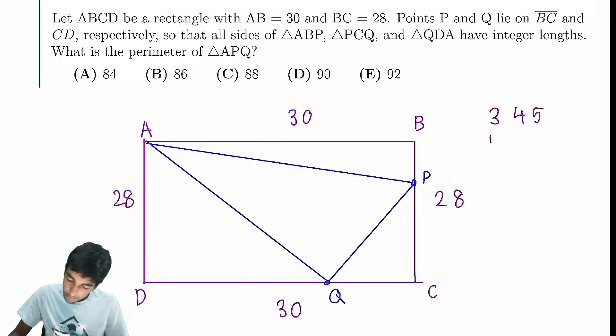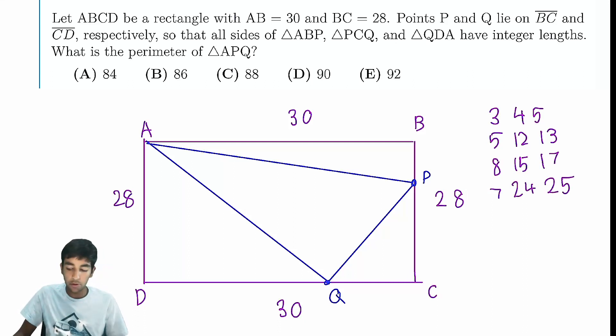Let's list out some of the common Pythagorean triples. Of course, 3-4-5, 5-12-13, 8-15-17, 7-24-25. These are like the main ones you absolutely have to know.